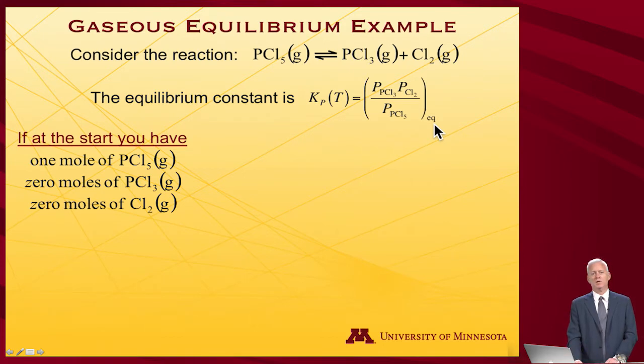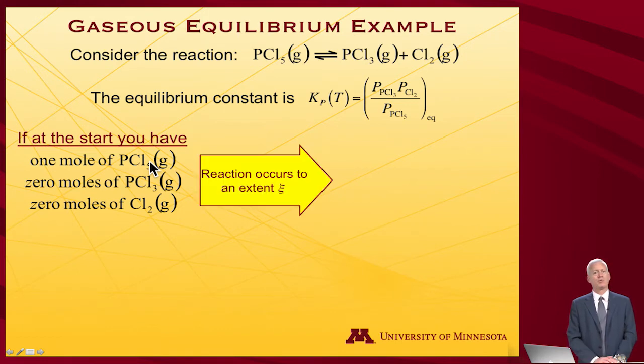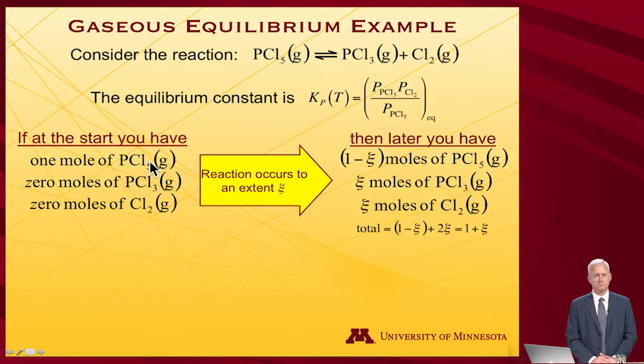So if at the beginning you have one mole of PCl5 and you introduce it into a vessel, the reaction will occur to some extent ξ. At the end of that process, you will have (1 - ξ) moles of PCl5 left, and you'll have generated ξ moles of phosphorus trichloride and ξ moles of chlorine gas.